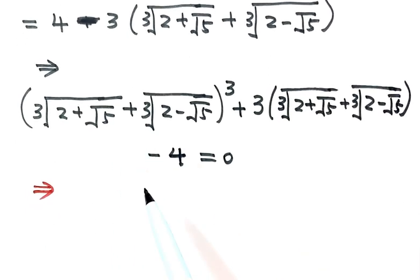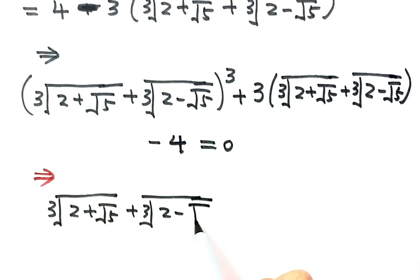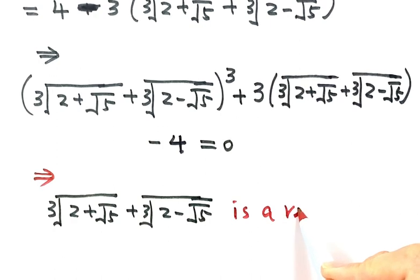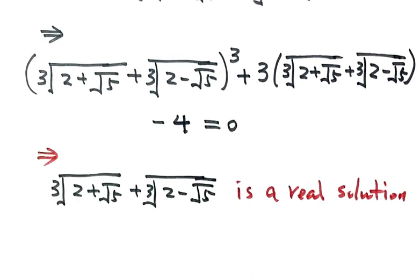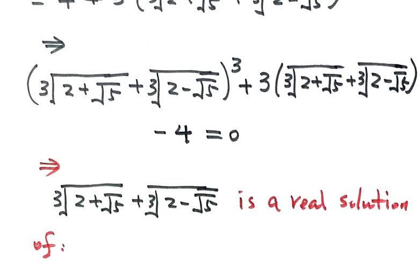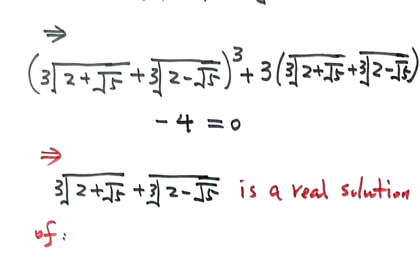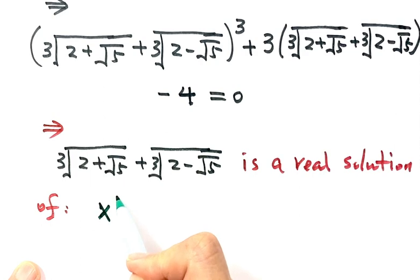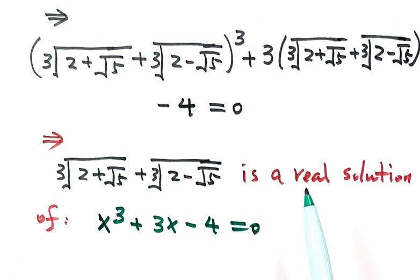So this quantity — the sum of the two cube roots — is a real number, and it is a real solution of the equation x³ + 3x - 4 = 0. This equation comes directly from our expansion above.